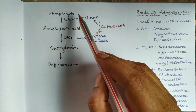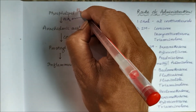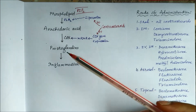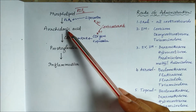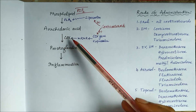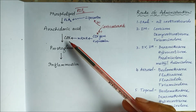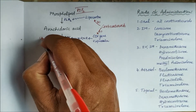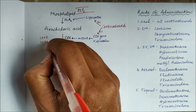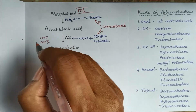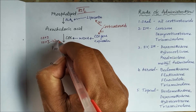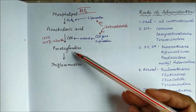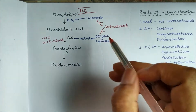Phospholipid — usually PIP2, phosphatidyl inositol diphosphate — located on the cell membrane is converted by phospholipase A2 to arachidonic acid. Arachidonic acid, by the action of cyclooxygenase (COX), produces prostaglandins. COX exists as two types: COX-1, which is constitutive, and COX-2, which is inducible. During inflammation, COX-2 is induced, leading to prostaglandin production and inflammation.